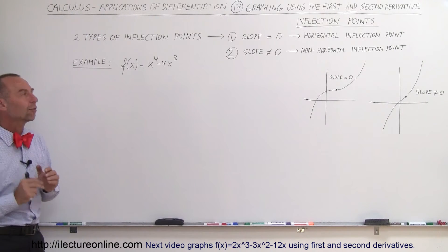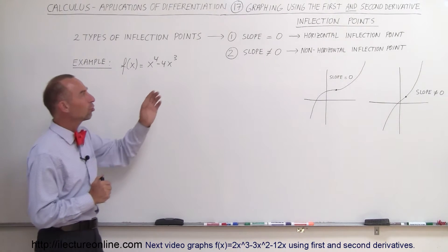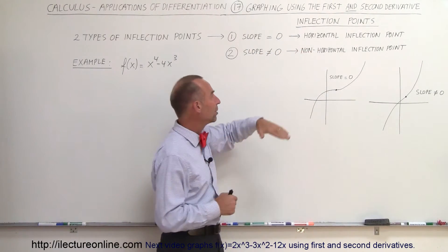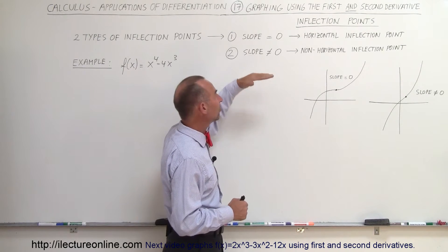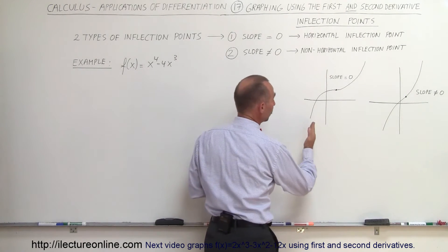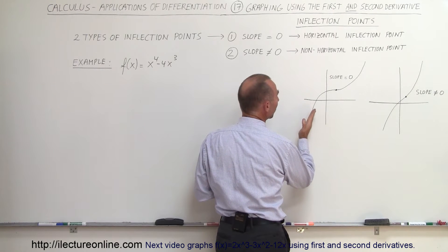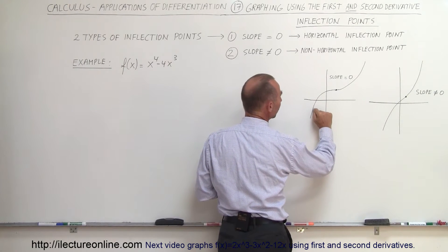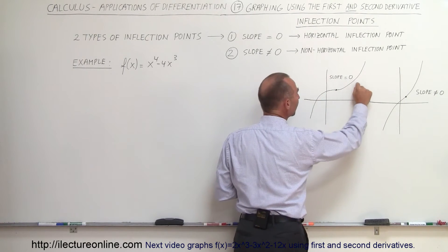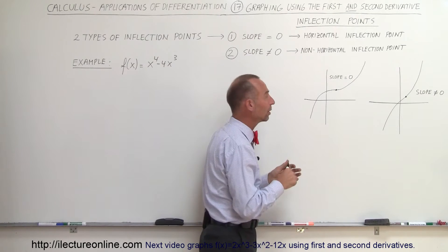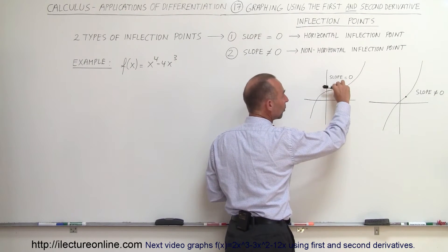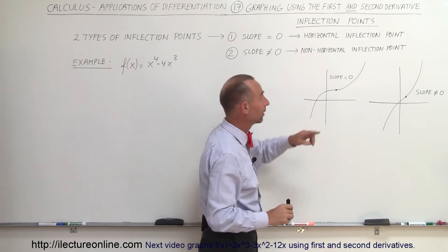There are two different kinds of inflection points. One is where the slope of the function at the inflection point is equal to zero, and the other is where the slope is not equal to zero. Graphically, in the first case, the slope is positive but decreasing — so this is concave down. We get to a point where we go from concave down to concave up; that's the inflection point, and at that particular inflection point the slope is zero.